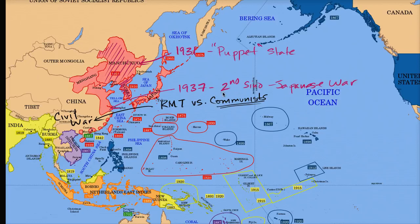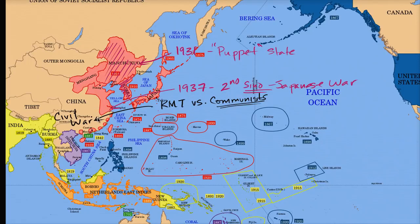Many historians actually consider this the beginning of World War II, or at least the beginning of the Asian theater — the all-out war between Japan and China. But it isn't until Germany invades Poland in 1939 that you truly have the formal beginning of World War II. Regardless, the Second Sino-Japanese War is incredibly brutal and bloody, affecting a lot of civilians. This civil war takes a back seat to fighting off the aggressor Japan in 1937, laying the foundation for what's happening in the Pacific in the run-up to World War II.